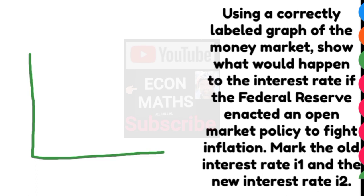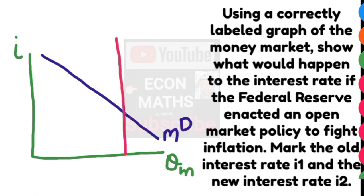We start out by drawing a properly labeled money market: nominal interest rate on the y-axis and quantity demanded of money on the x-axis. The money demand curve is downward sloped and the money supply curve is vertical. Let us draw it here.